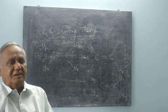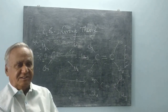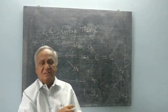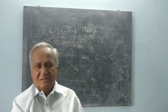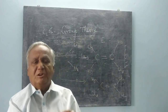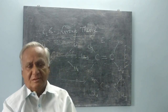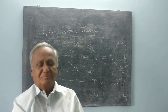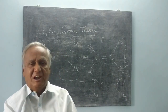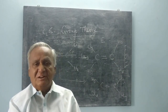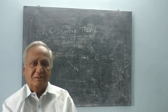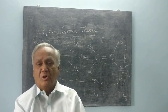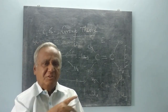Another symmetry element that could be present in a molecule is identity, denoted as E. The operation is: don't do anything — leave it as it is. If you leave it as it is, the molecule is identical to itself. This is needed because for a set of elements to form a mathematical group, there must be one element which when multiplied by any other element leaves it unchanged — just as the number 1 in multiplication. So to fulfill that condition, we introduce the identity element.